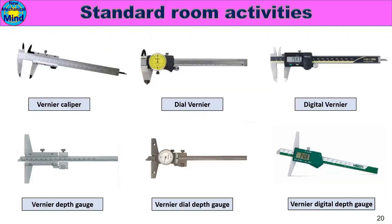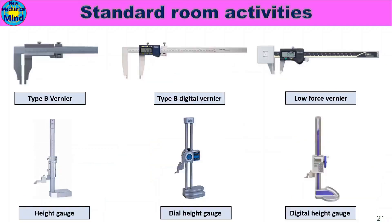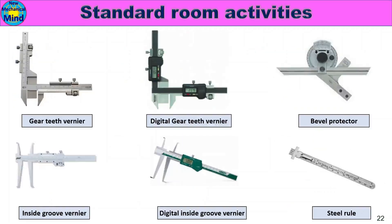Examples of measuring instruments include: Vernier caliper, dial vernier, digital vernier, Vernier depth gauge, Vernier dial depth gauge, Vernier digital depth gauge, Type B Vernier, Type B digital Vernier, low force Vernier, height gauge, dial height gauge, digital height gauge, gear teeth Vernier, digital gear teeth Vernier, bevel protractor, inside groove vernier, digital inside groove vernier, and steel rule.